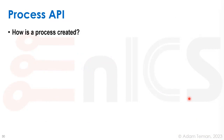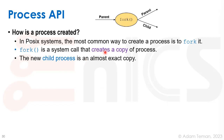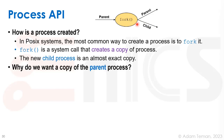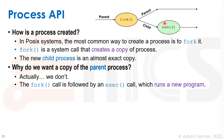We need to provide an API for processes. In POSIX systems, the most common way to create a process is with a fork command. The parent process calls fork, which creates a copy called the child process. Both parent and child continue to run. Almost immediately after fork, we call an exec command on the child process, which overwrites the text and static data area of the new process's memory map with the new program we want to execute.